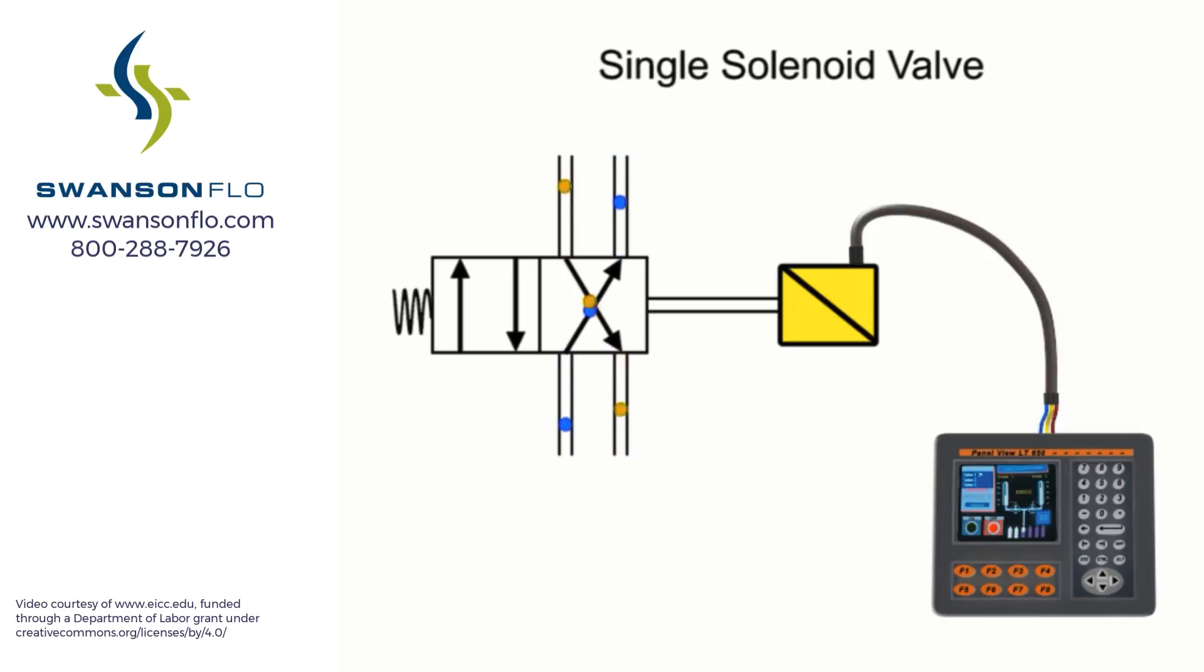Once the electrical current is removed and the solenoid is de-energized, the valve returns to its normal position by spring force. Fluid circuits designed to use single solenoid valves must maintain electrical current in order to keep the valve in its shifted position.